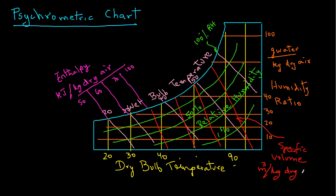As you see in this chart, we represent a number of properties: the dry bulb temperature, wet bulb temperature, humidity ratio, percent relative humidity, enthalpy, and specific volume.